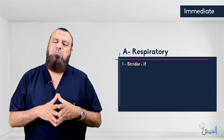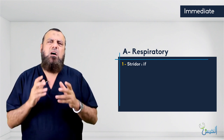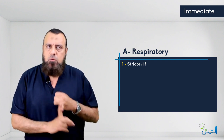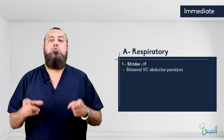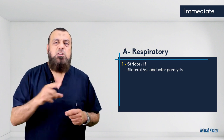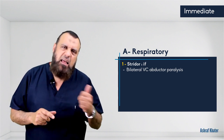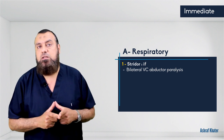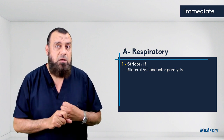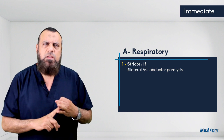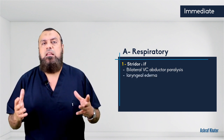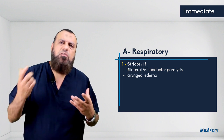Stridor is a very serious complication after thyroidectomy. The first cause is bilateral abductor paralysis of the vocal cords, occurring when there is partial bilateral injury to the recurrent laryngeal nerve, as explained previously in the anatomy chapter.